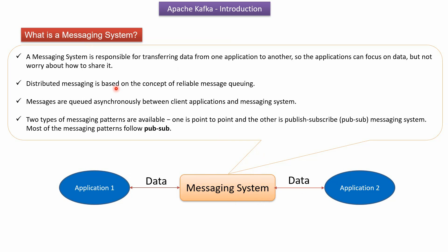Distributed messaging is based on the concept of a reliable messaging queue. Messages are queued asynchronously between client applications and the messaging system. There are two types of messaging patterns available: one is the point-to-point messaging system, and another is the publish-subscribe messaging system. Most messaging patterns follow the publish-subscribe message pattern.